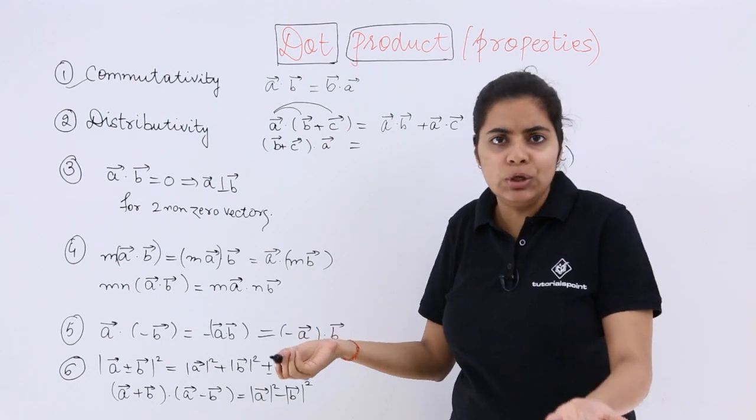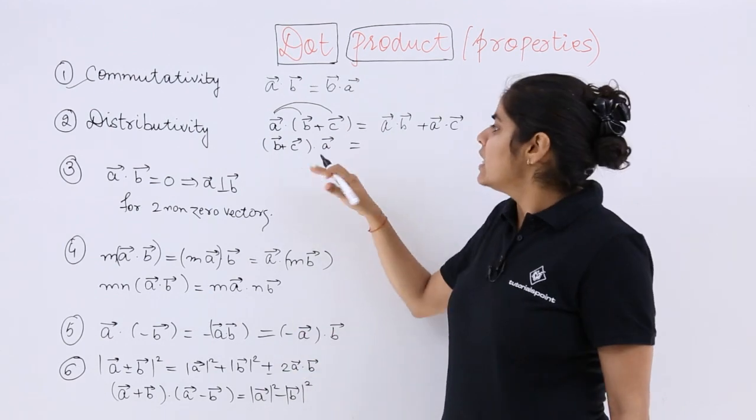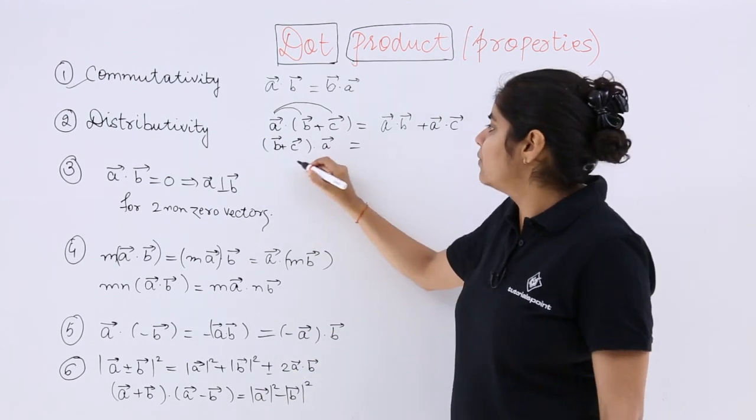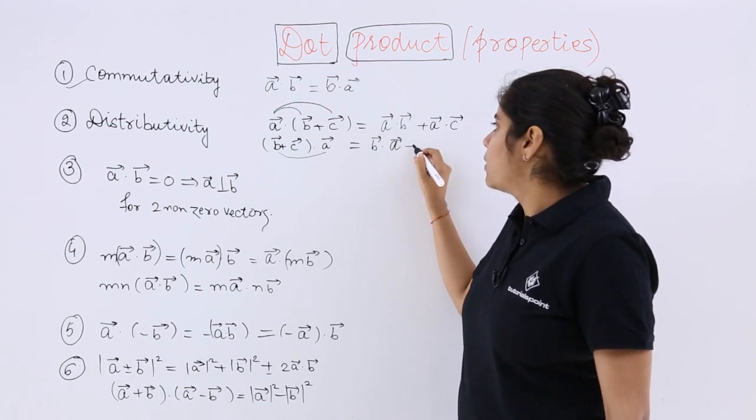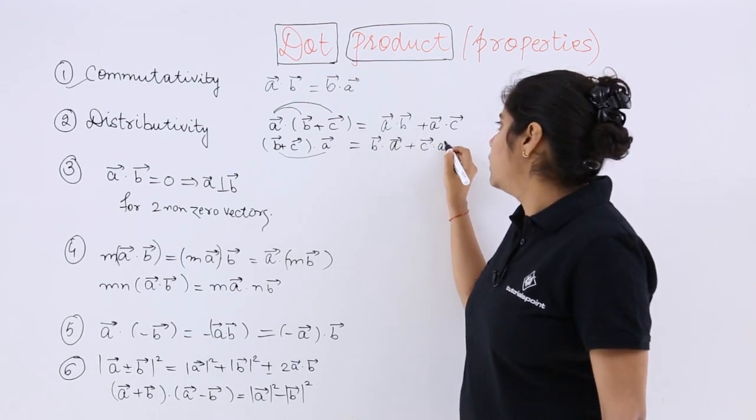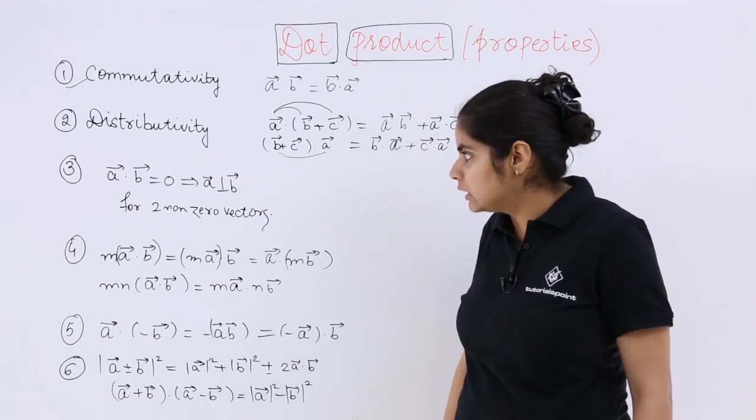Nothing is difficult in it, right? Next is right distributivity: (B plus C) vector dot A vector equals B vector dot A vector plus C vector dot A vector. Third case.